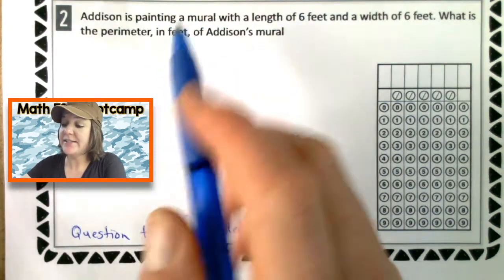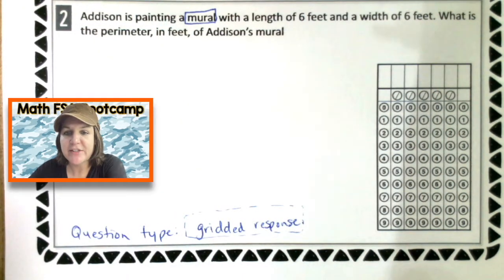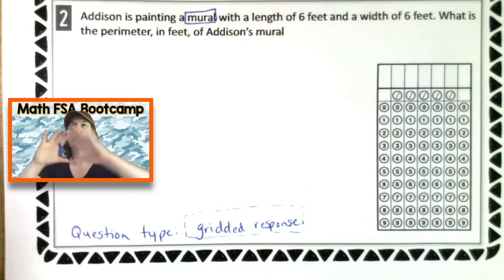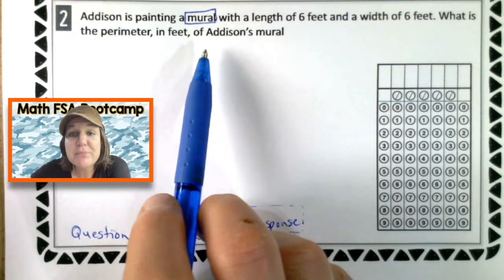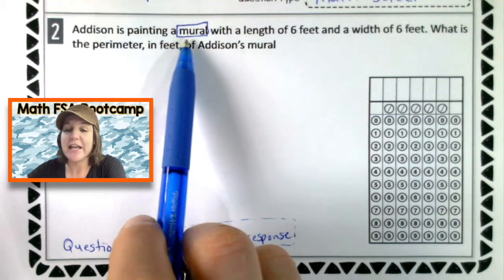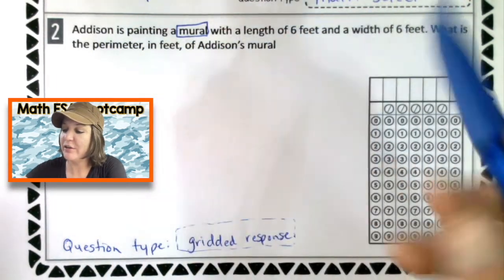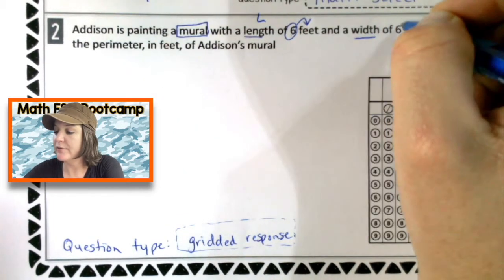Let's read it now and mark up our text. Addison is painting a mural. Ooh. A mural. Do y'all know what a mural is? It's a wall that an artist would paint. It's like a really large painting that a person usually puts on the side of their wall. In Florida, actually, there is a town called Lake Placid. And Lake Placid is known for their mural. So if you ever have the chance to go to Lake Placid, check it out. They've got tons of murals on the walls of their buildings throughout their town. It's really cool.